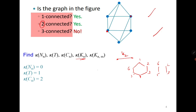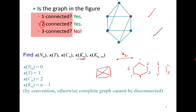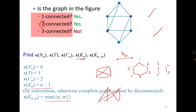For Kn, let me draw K4. In K4, even if I delete one vertex, two vertices, or three vertices, it would not be disconnected. So, just by convention, we assume that its vertex connectivity is n − 1. The last one is the complete bipartite graph. Its vertex connectivity is the minimum of n and m. For example, when you draw K2,3, if you delete these two vertices, the remaining graph is disconnected.